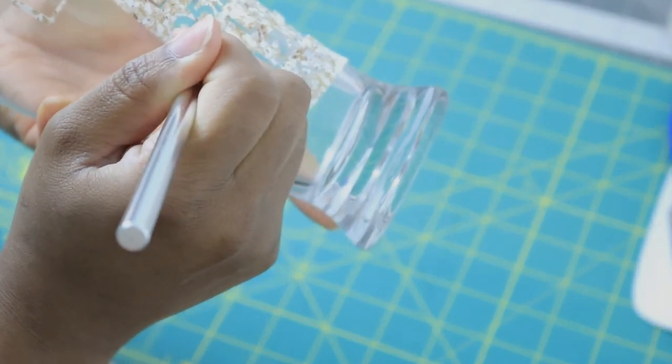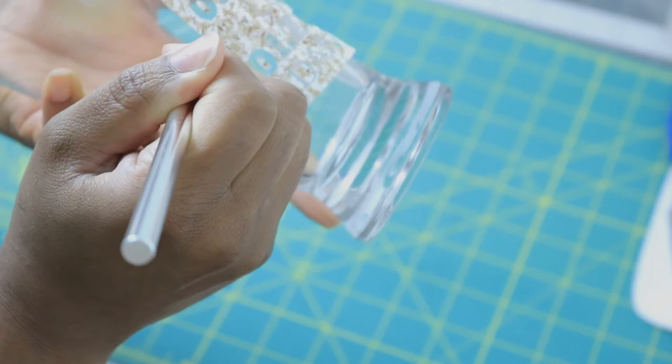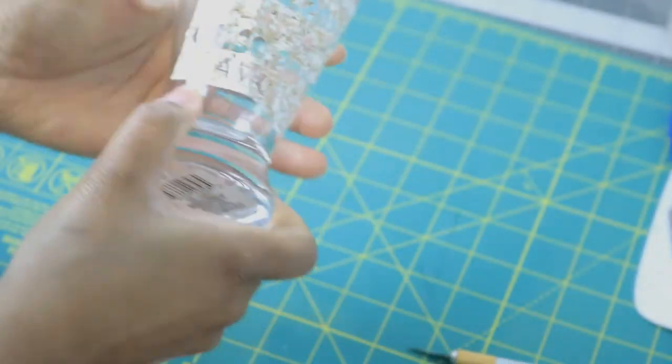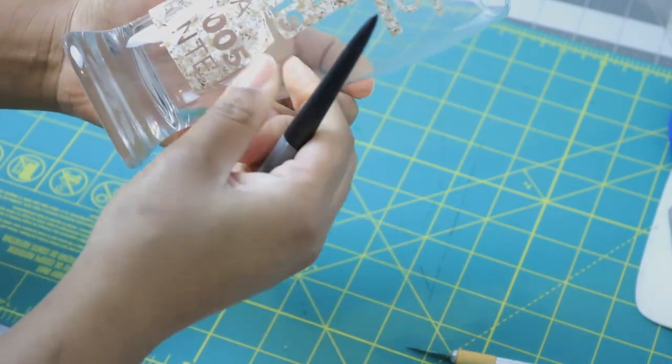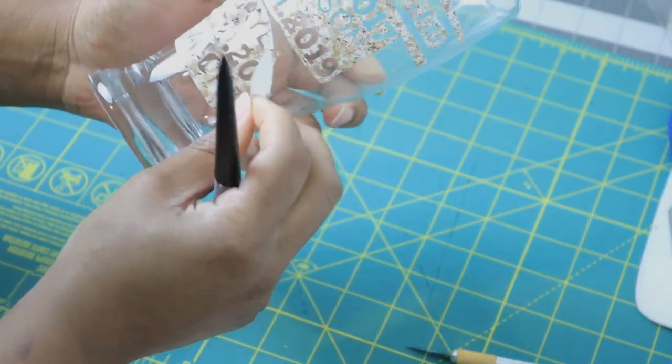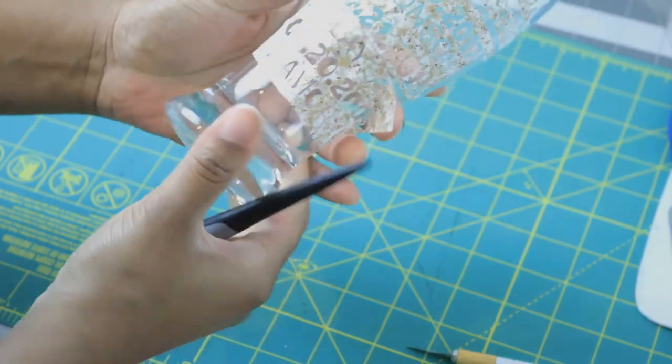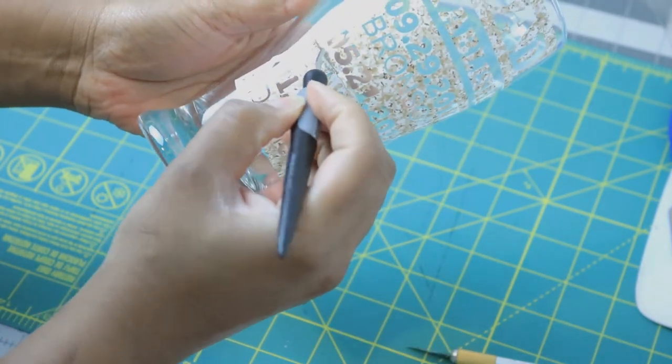This will allow me to remove the contact paper and reposition it better on the glass. I got my removal tool that I use for weeding and I'm going to remove this entire bottom half, which isn't much because I only have a couple of zeros.